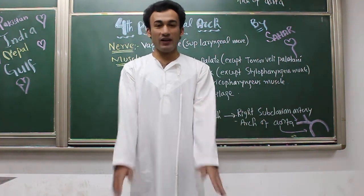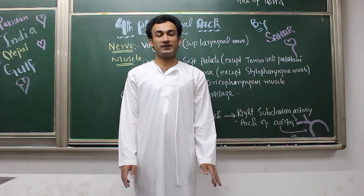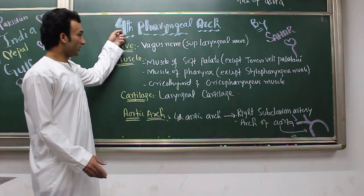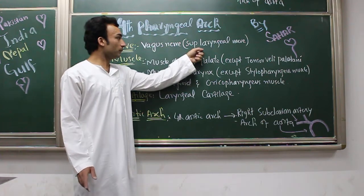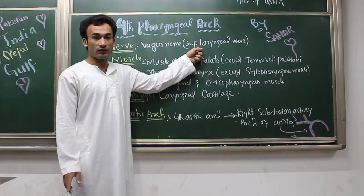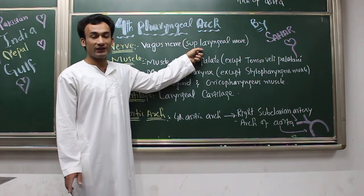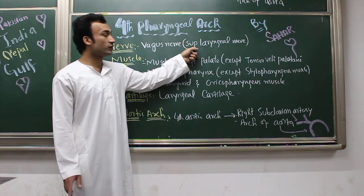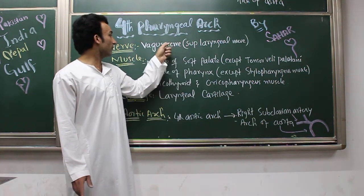Hello guys, hope you all are fine. Today we are going to talk about the fourth pharyngeal arch and sixth pharyngeal arch. So let's start. The nerve for the fourth pharyngeal arch is the vagus nerve — specifically the superior laryngeal nerve, which is a branch of the vagus nerve, cranial nerve number 10. The superior laryngeal nerve is the nerve for the fourth pharyngeal arch.